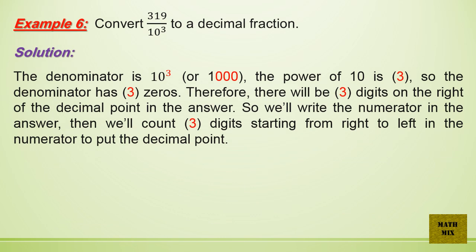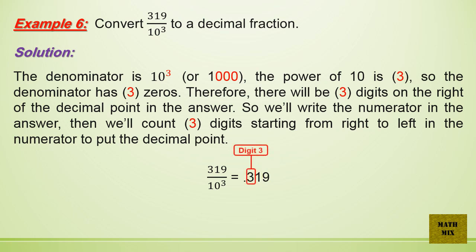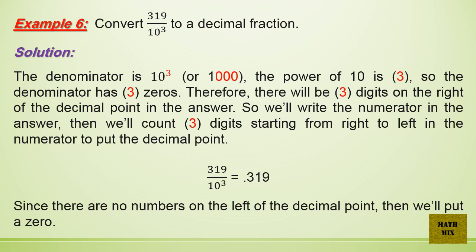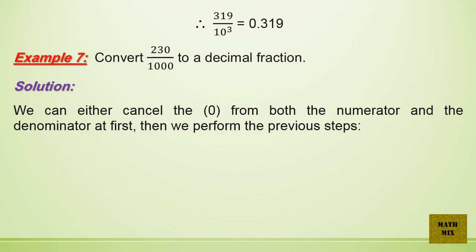Example 6: Convert 319 over 10 cubed to a decimal fraction. The denominator is 10 cubed, or 1,000. The power of 10 is 3, so the denominator has 3 zeros. Therefore, there will be 3 digits on the right of the decimal point. We write the numerator, then count 3 digits from right to left to place the decimal point. Since there are no numbers on the left of the decimal point, we put a 0. Therefore, 319 over 10 cubed equals 0.319.